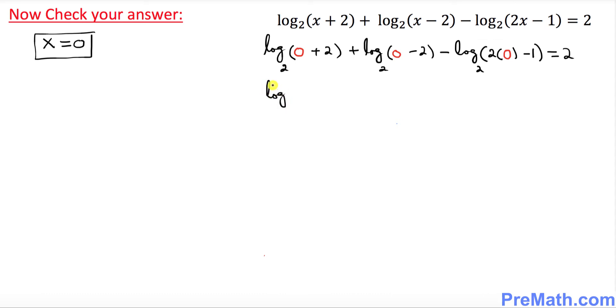So log of 0 plus 2 is 2 with a base 2 plus log of 0 minus 2 is negative 2 with a base 2 minus log of 0 times 2 is 0 minus 1 makes negative 1 with a base 2 equals to 2.